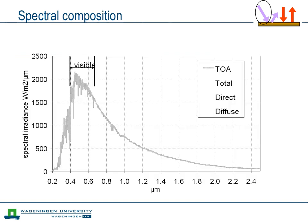Next, we turn to the effect of the atmosphere on the spectral composition of the radiation at the Earth's surface. But before we get to the Earth's surface, we start with a picture of the radiation at the top of the atmosphere. Here we see the spectral composition of the shortwave radiation arriving there. The curve resembles the Planck curve for an object with a temperature of around 6000 Kelvin, but it is not as smooth as a Planck curve. This is probably mainly due to the absorption of a part of the radiation by the outer layers of the Sun. The part of the spectrum that we as humans consider visible radiation is indicated with the arrow, and this part happens to be located around the peak of the spectrum.